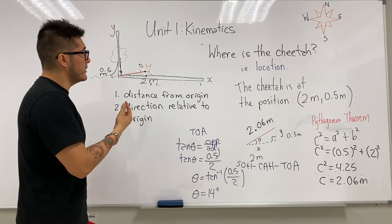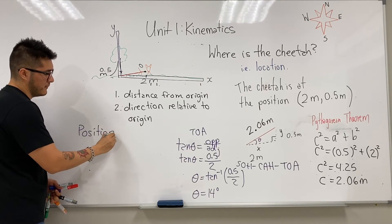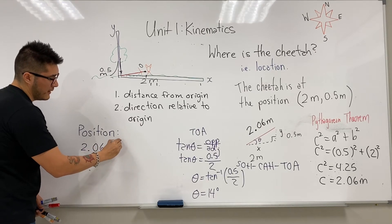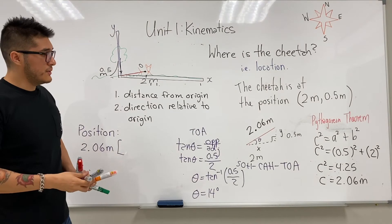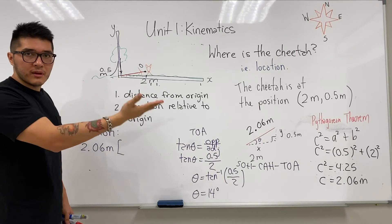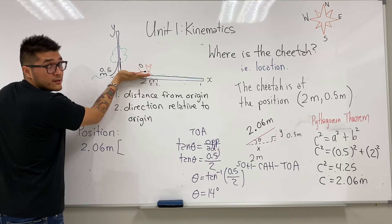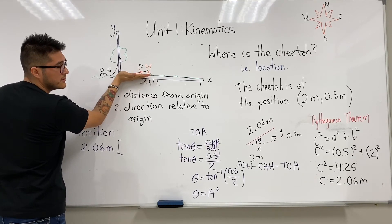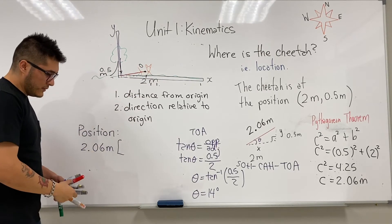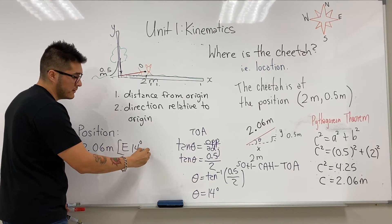Now let's fully describe the position of the cheetah. The cheetah is a distance of 2.06 meters. Now that we know the angle, we use the compass to help. We use square brackets, and one way to write the direction is: imagine placing your hand starting East. To get to where the cheetah is, you start East and rotate 14 degrees towards North. So we write: starting East, 14 degrees rotating towards North.